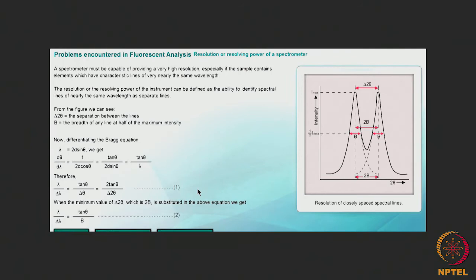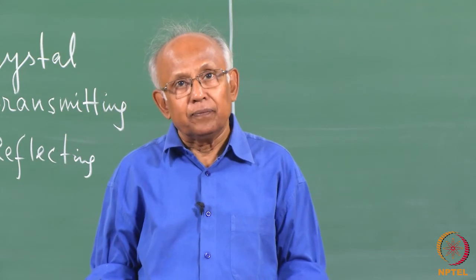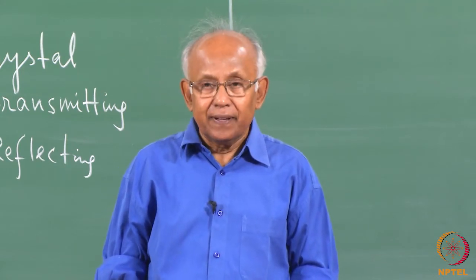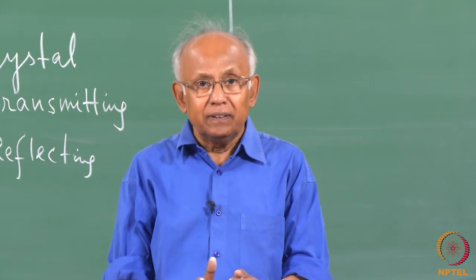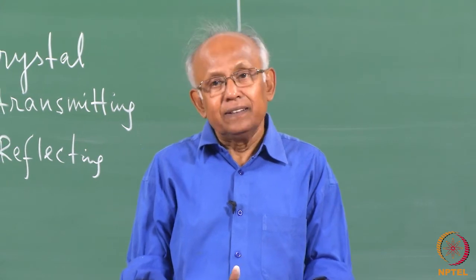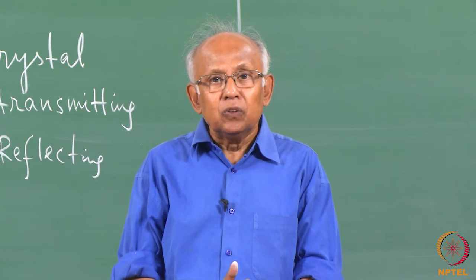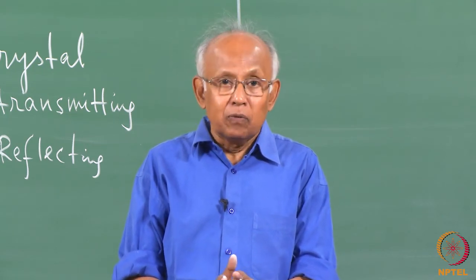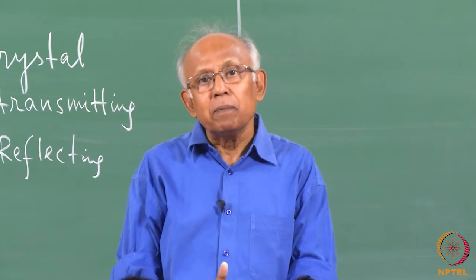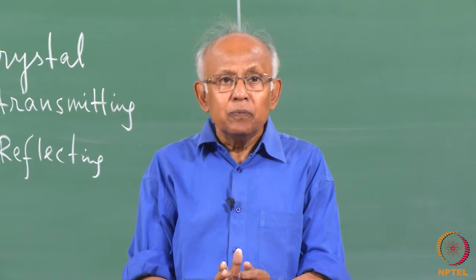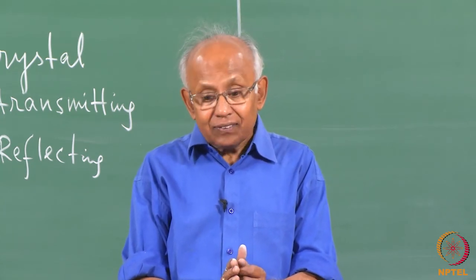The most important attribute of an X-ray spectrometer is its resolution or resolving power. For example, if two elements A and B are present in the sample and their characteristic radiations have very similar wavelengths, unless the equipment has the right resolving power, those two wavelengths may not be distinguished as separate ones and will merge into one. Resolution must be high to resolve two closely spaced characteristic wavelengths as distinct.